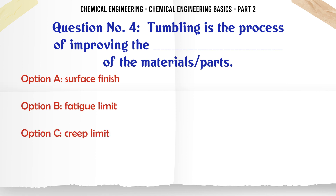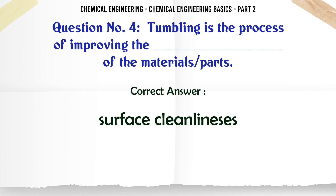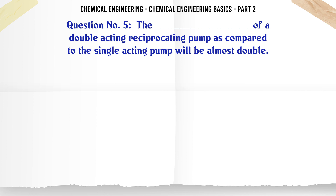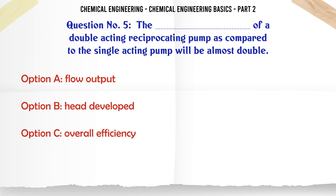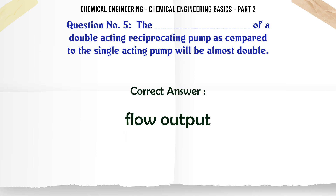Tumbling is the process of improving the __ of material parts: a) surface finish, b) fatigue limit, c) creep limit, d) surface cleanliness. The correct answer is: surface cleanliness. The flow output of a double-acting reciprocating pump as compared to a single-acting pump will be almost double.